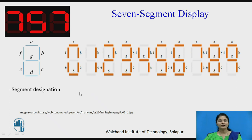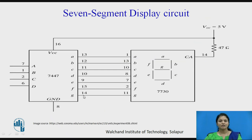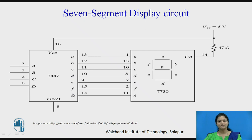Now while constructing this 7-segment display, we need a decoder circuit which will convert the BCD input A, B, C, D into the 7-segment format. So here in the 7447 IC, the BCD number A, B, C, D is converted into the 7-segment format A, B, C, D, E, F, G. That 7-segment output is provided to the display and it will display any BCD number.